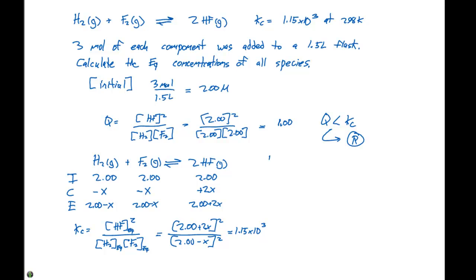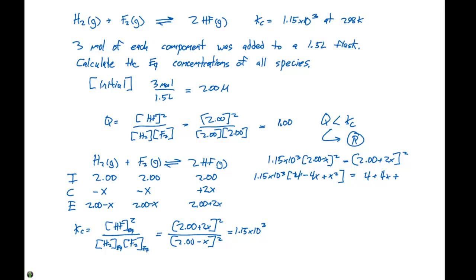We're going to have to go back to some algebra to evaluate this expression. We rearrange to get 1.15 times 10 to the second times (2.00 minus x) squared equals (2.00 plus 2x) squared. Note: the Kc should be 1.15 times 10 to the second — not the third — so we'll use that correction going forward. Expanding, we get 1.15 times 10 to the second times (4 minus 4x plus x²) equals 4 plus 4x plus x².